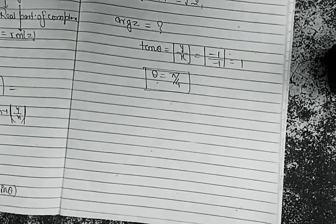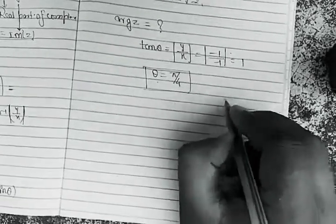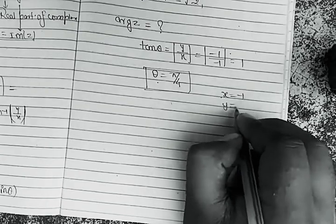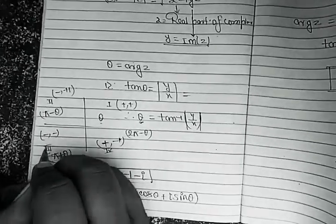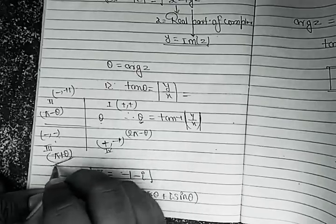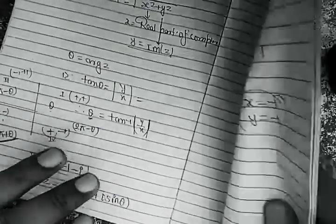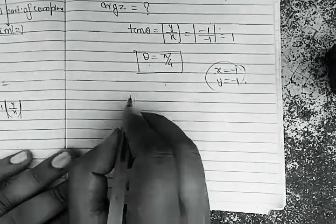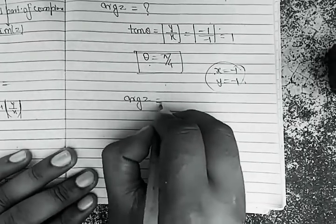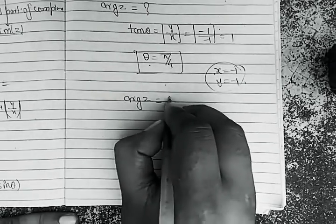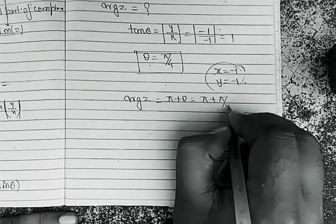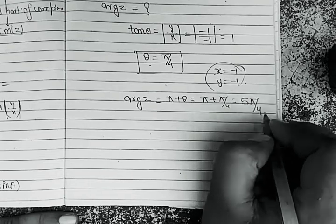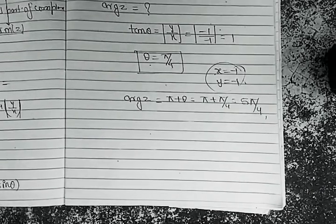Now, looking at x equals −1 and y equals −1, both are negative, so the complex number lies in the third quadrant. For the third quadrant, the argument equals π plus θ. So the argument equals π + π/4 = 5π/4. This is the argument of the complex number.